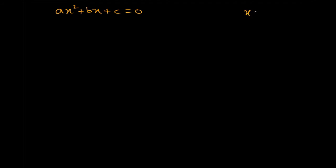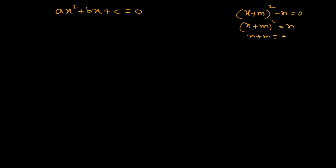We want to put this in the form x plus n, all squared, minus n, that is equal to 0. So that we can say that x plus n whole squared equals n. Then x plus n equals plus or minus root n, so x equals minus n plus or minus root n.